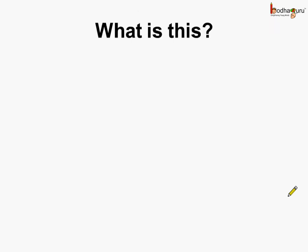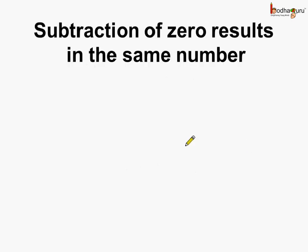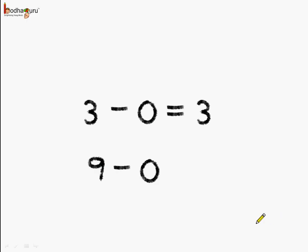Now, let us see the property of 0. What is 3 minus 0 equal to? And what is 9 minus 0 equal to? We will see that subtraction of 0 results in the same number. 3 minus 0 is equal to 3, and 9 minus 0 is equal to 9.